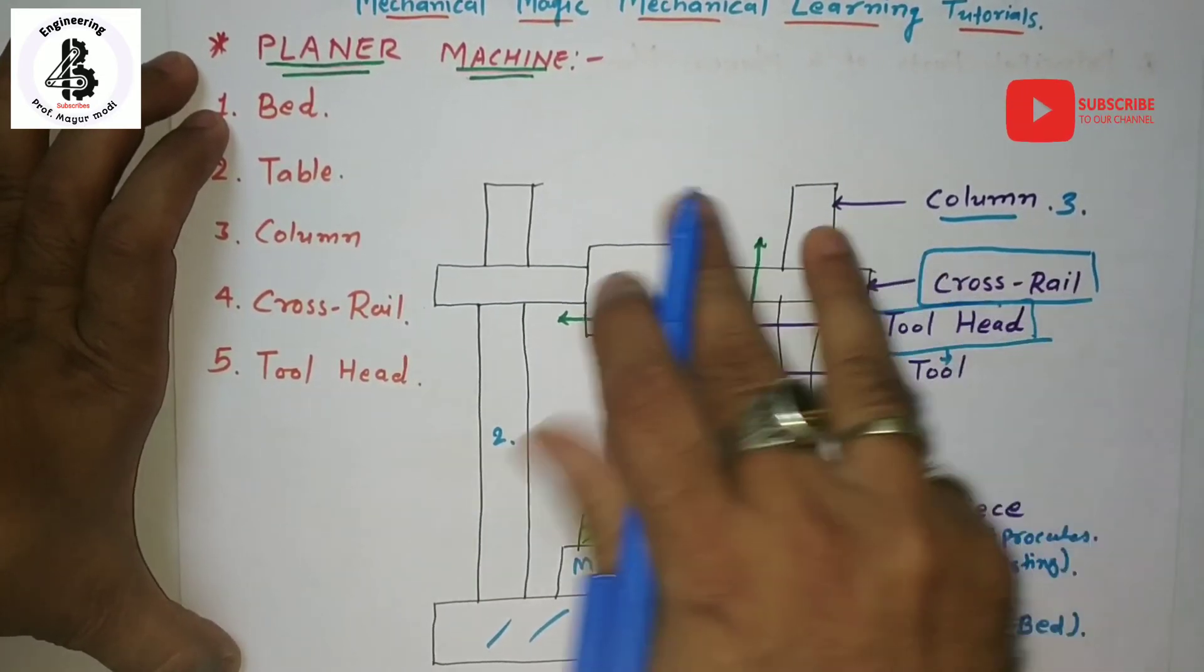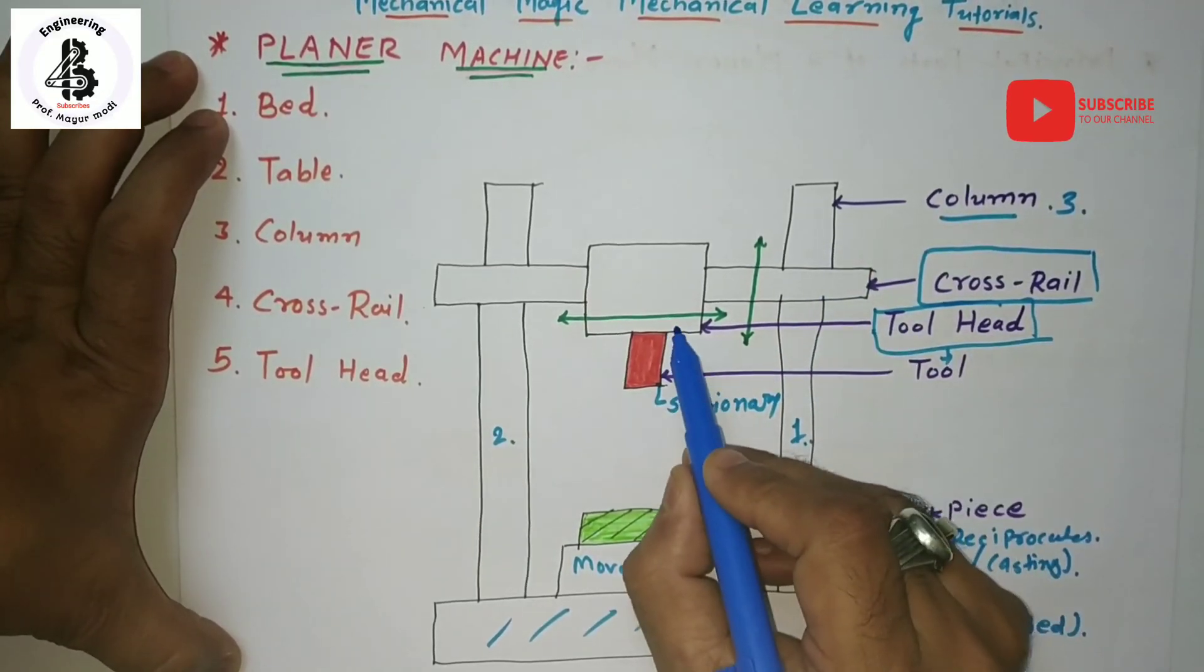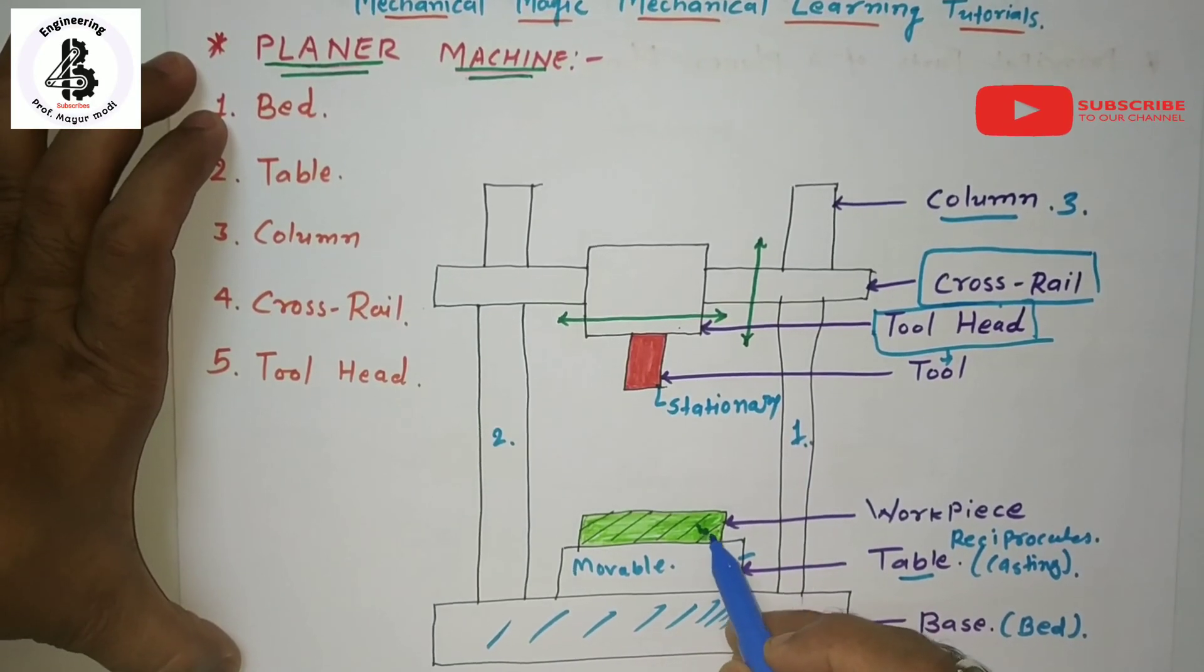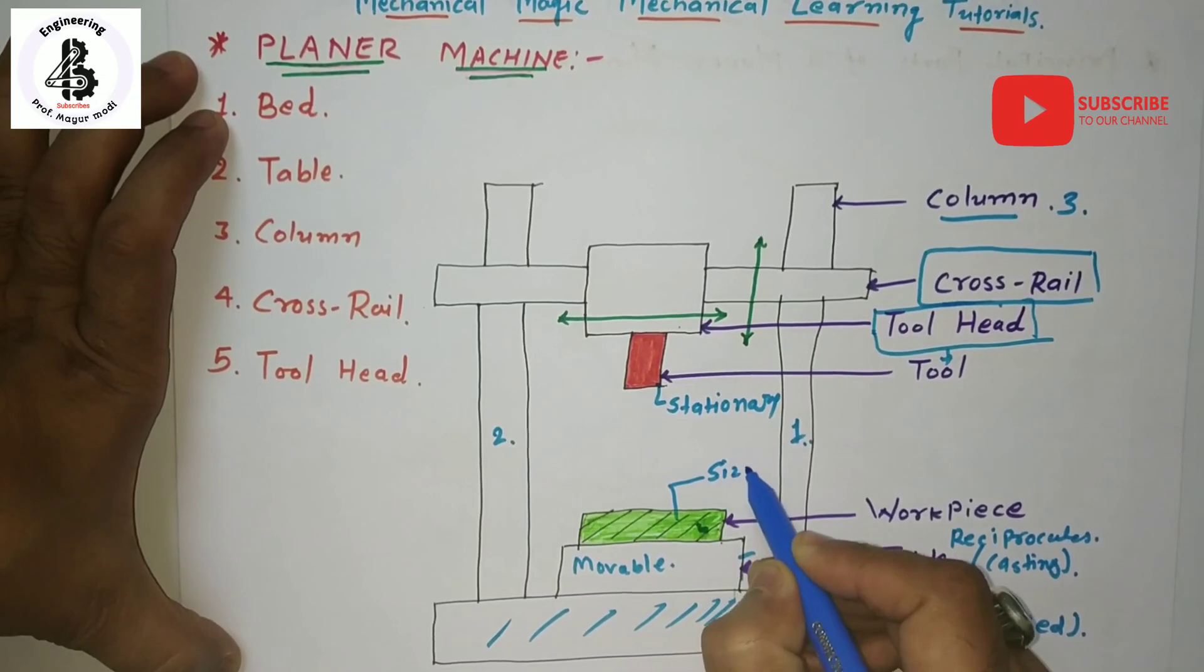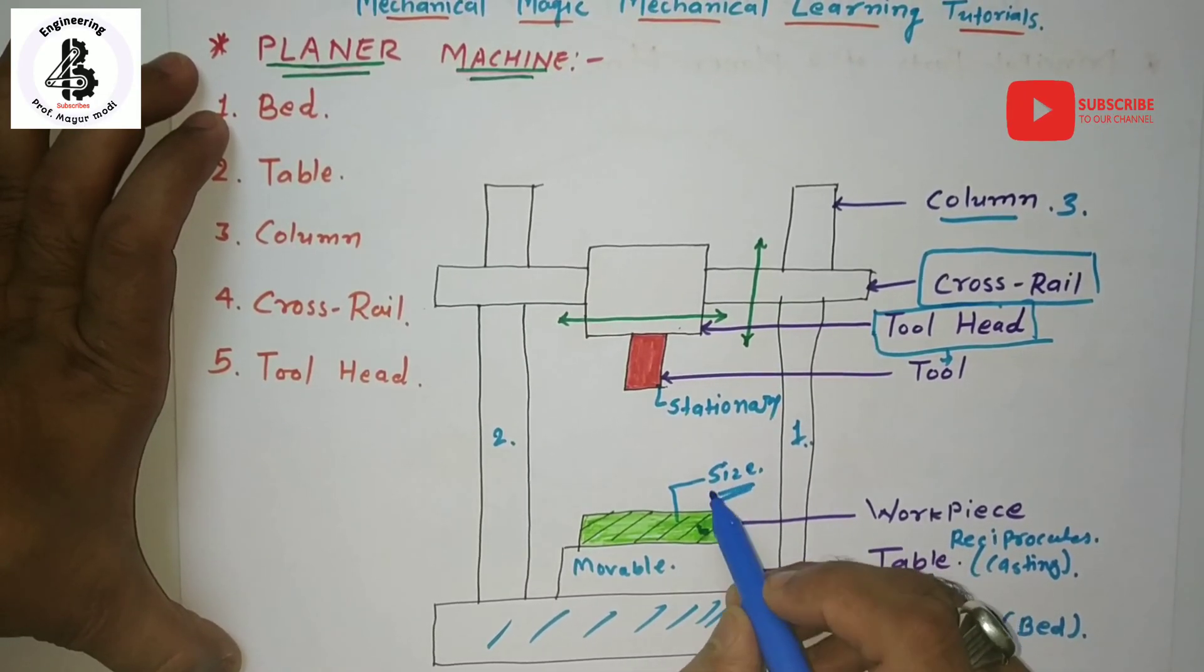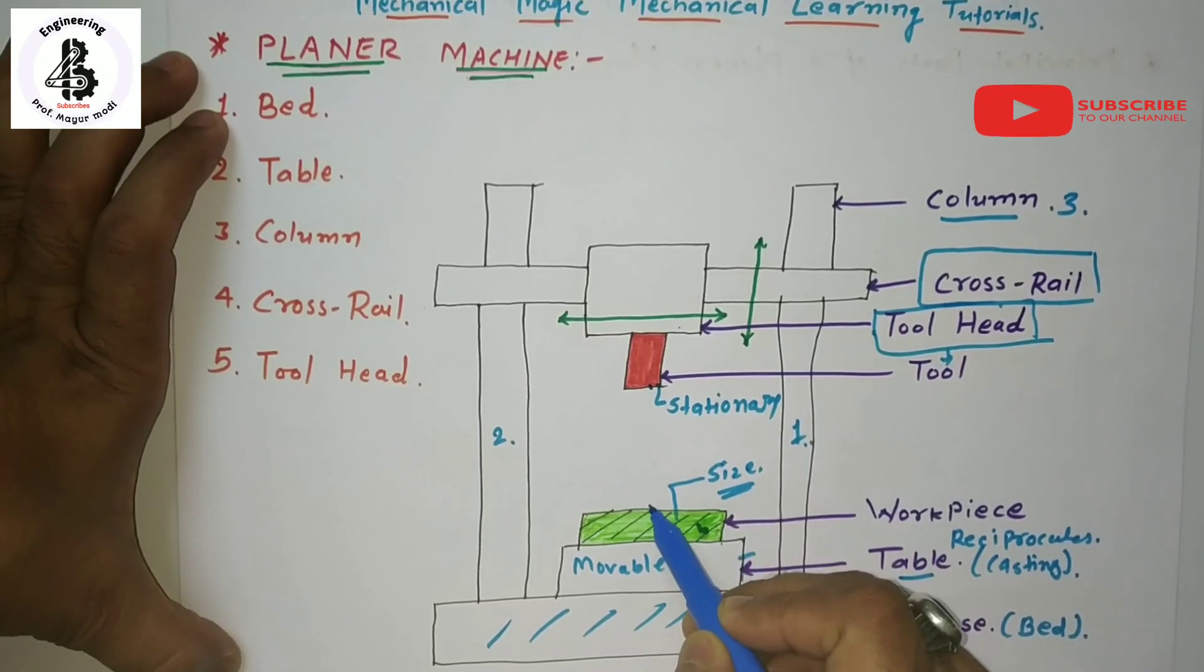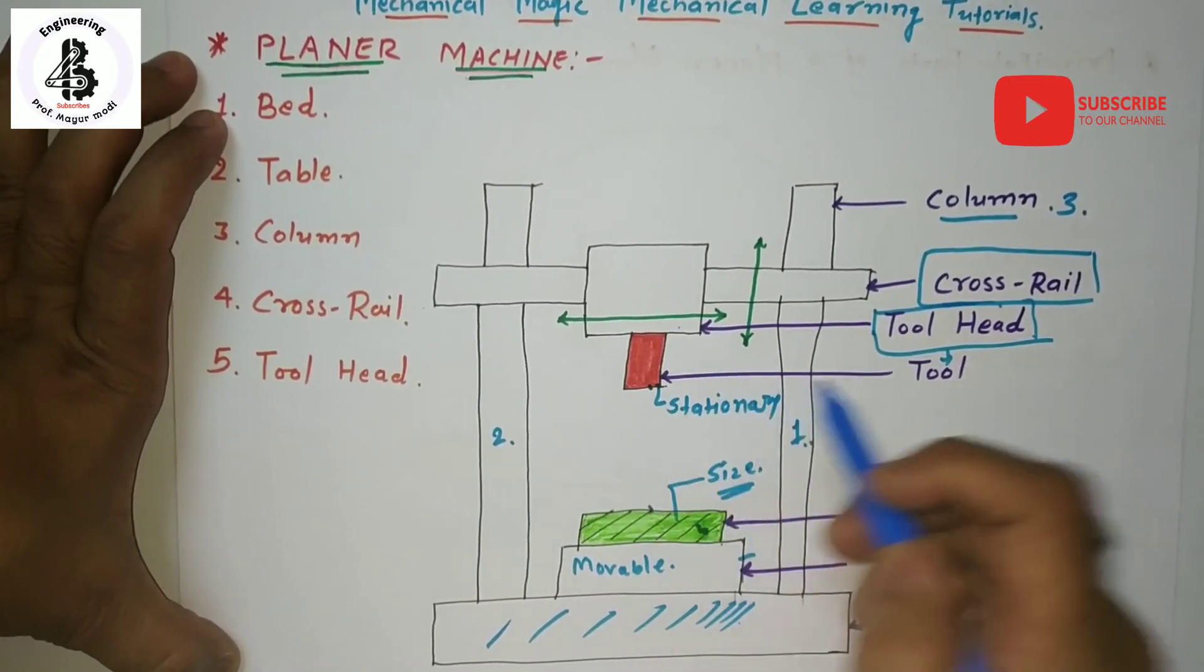Two columns are used to adjust the height of the tool head with respect to the size of the workpiece so that height will be maintained in contact with the workpiece material.